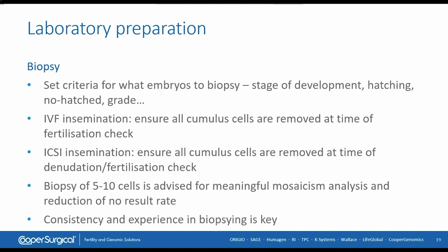You can use IVF or ICSI insemination. IVF is possible because for genomic testing, the DNA of the sperm will not be amplified — but check with your genomic provider. However, we can introduce foreign DNA by leaving cumulus cells on the zona pellucida; if we take one of those cumulus cells in the biopsy pipette, we create artificial mosaicism. So ensure all cumulus cells are removed at time of fertilization check for IVF, and at time of denudation and/or fertilization check for ICSI.